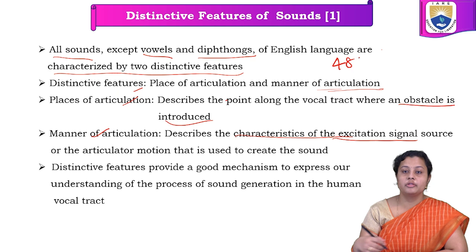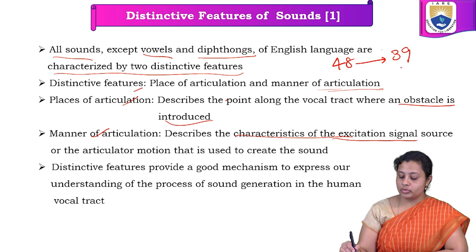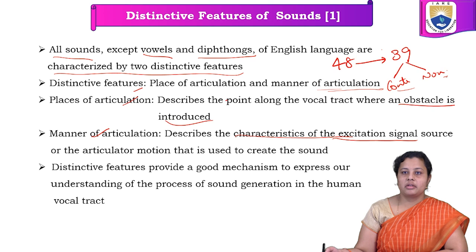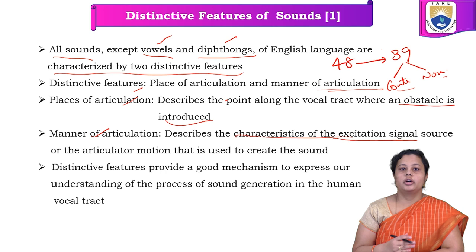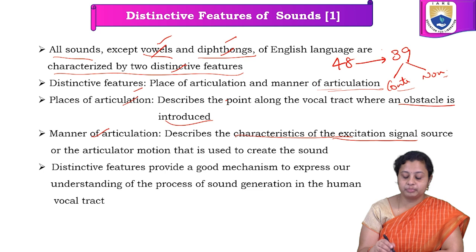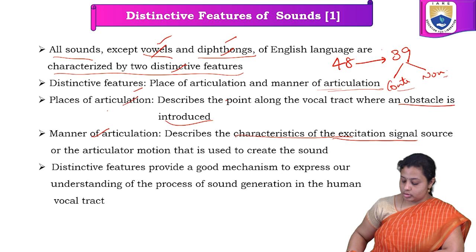Basically, we had 48 phonemes in English language that we have converted into only 39 sounds. Out of those 39 sounds, we had two types: continuant sounds and non-continuant sounds. All these continuant and non-continuant sounds can be divided into vowels, diphthongs, and other sounds. Vowels and diphthongs are important; the rest of the sound signals are characterized based on place of articulation and manner of articulation.